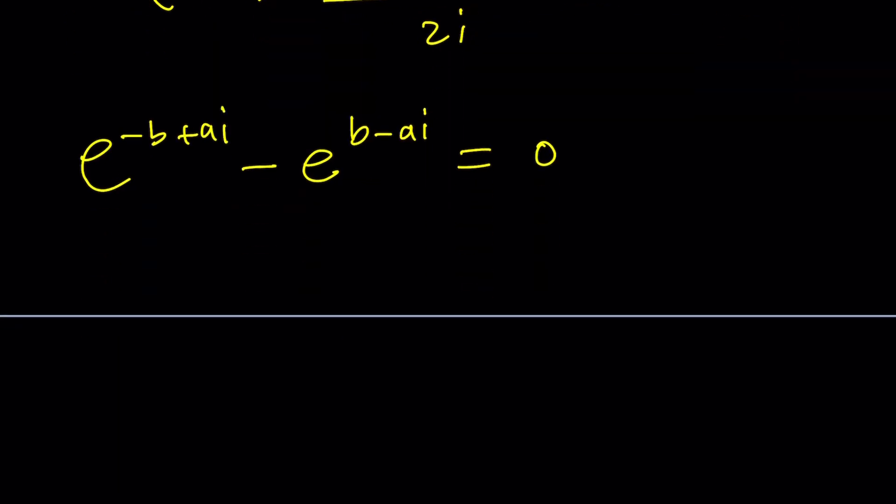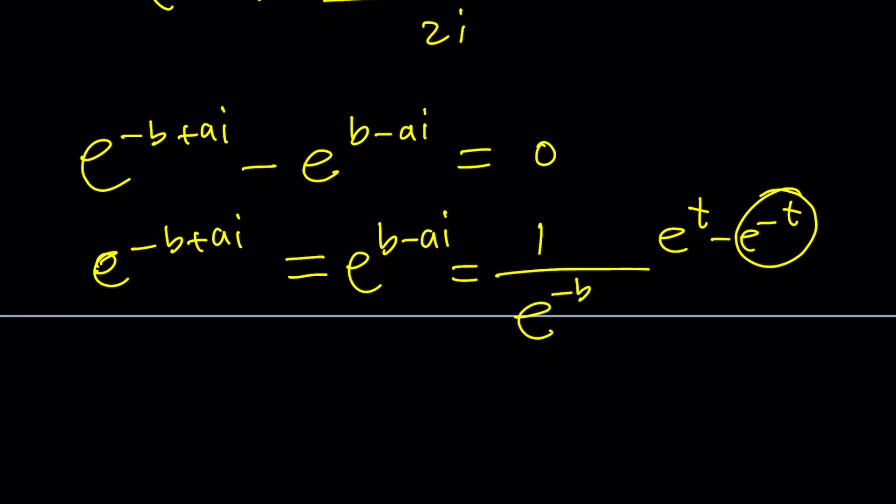So these two are opposites and we're going to set it equal to zero. Since the exponents are opposite, it's kind of like e to the power t minus e to the power negative t. We can write this as a reciprocal. Let's go ahead and write it as e to the power negative b plus ai equals e to the power b minus ai, which can be written as 1 over e to the power negative b plus ai. You see the relationship? These two are the same thing.